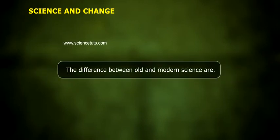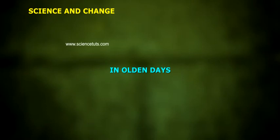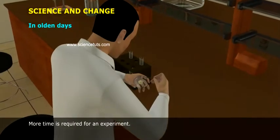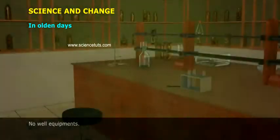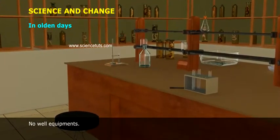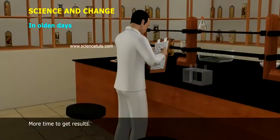The difference between old and modern science: In olden days, more time was required for an experiment, no well-equipped tools, and more time to get results.